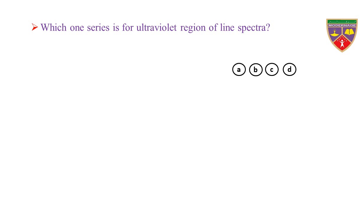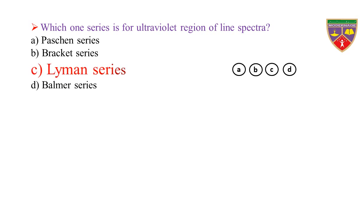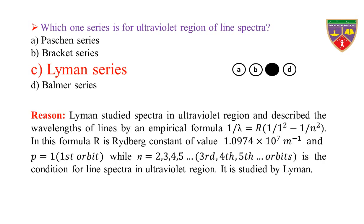Which one series is for the ultraviolet region of line spectra? Option A, Paschen series; Option B, Brackett series; Option C, Lyman series; Option D, Balmer series. The key is Lyman series. Therefore, the correct option is C. Reason: Lyman studied spectra in the ultraviolet region and described the wavelength of lines by an empirical formula.